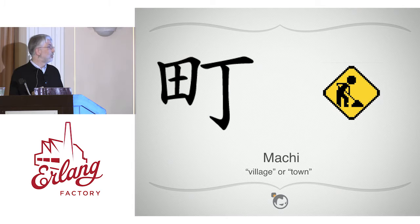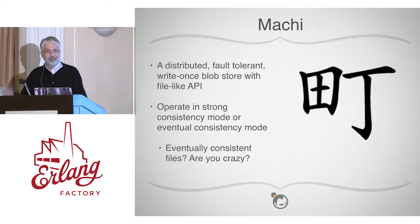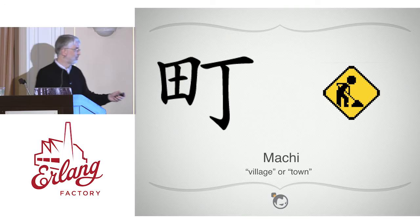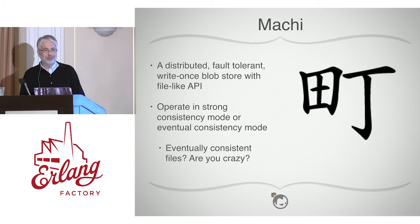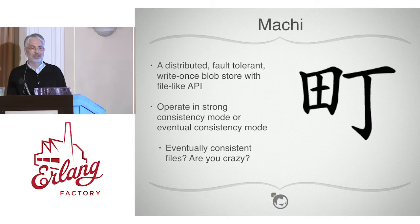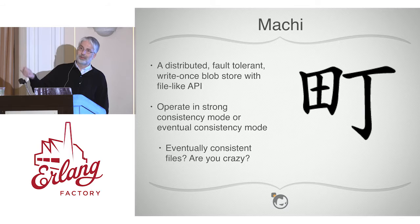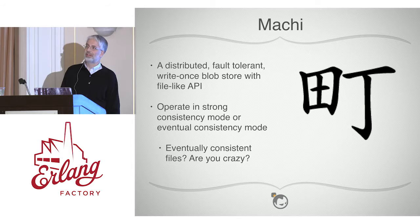Machi is still under construction. It's a distributed fault-tolerant write-once blob store with a slightly different, more file-like API. It can operate in both strongly consistent and eventually consistent mode. At Basho, we have a great fondness for eventual consistency stores where availability comes first.